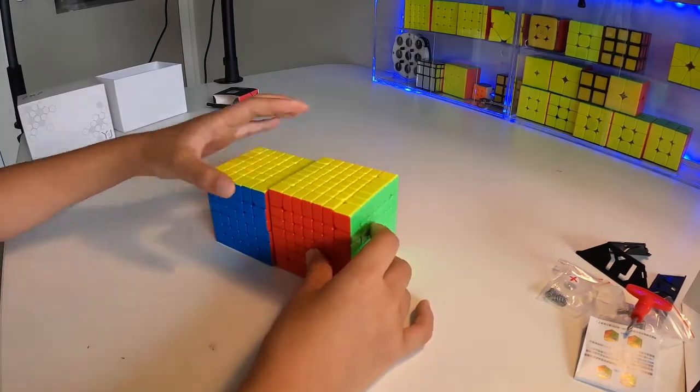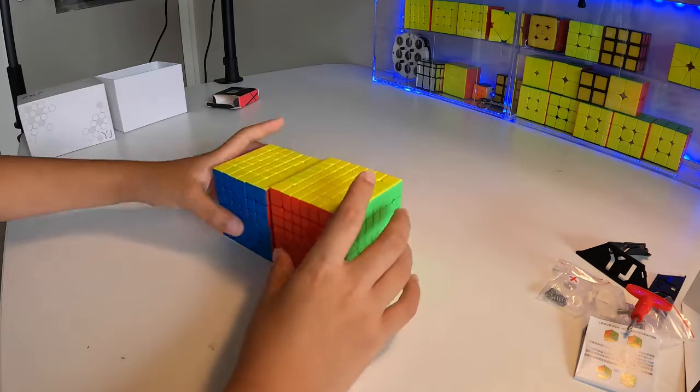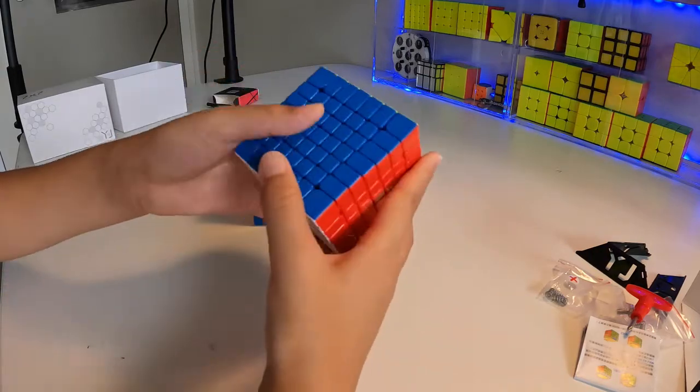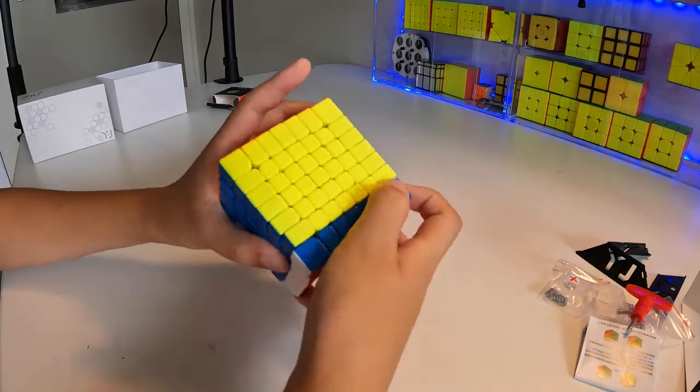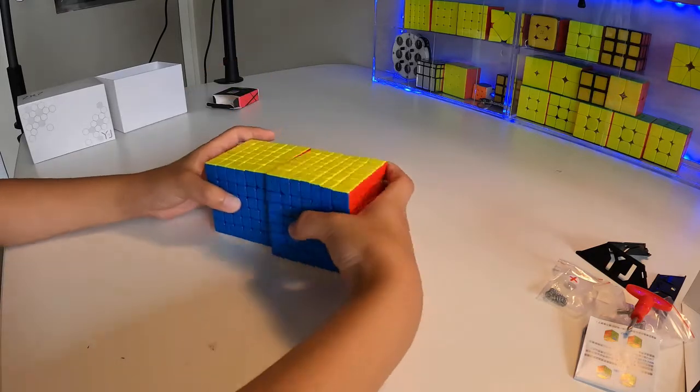But the size is kind of nearly the same, of course. So the bigger cube you get, the smaller the pieces get as well. So yeah, the size comparison between the 6x6 is pretty similar.